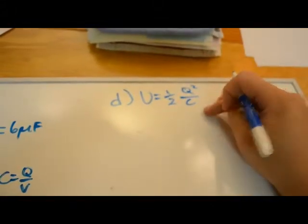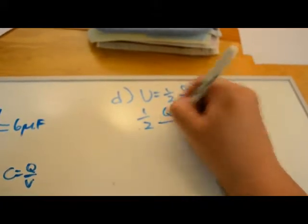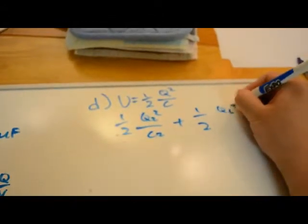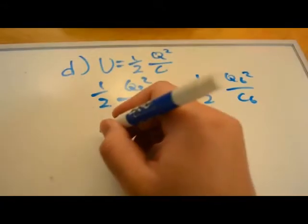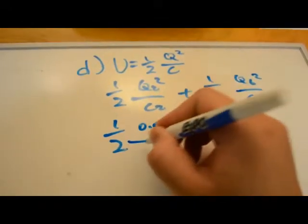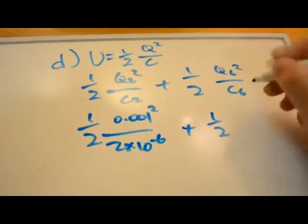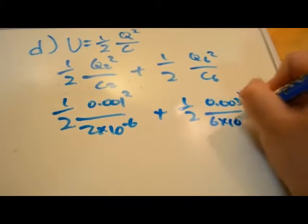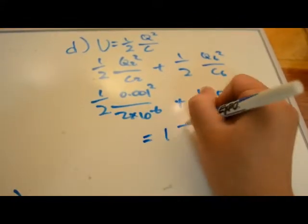We plug in Q and C for all of them. So one half Q2 squared over C2 plus one half Q6 squared over C6. Plugging in the numbers, this equals 1 joule of energy.